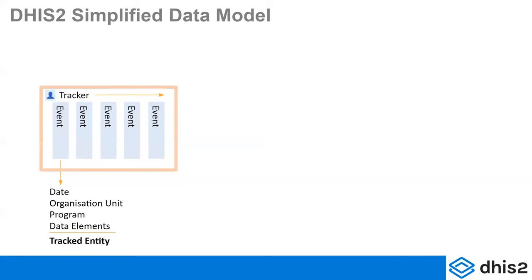But if you wrap a tracked entity around a series of events, then it becomes Tracker. This is when you get to have a longitudinal record so that events are not standalone, but actually follow a meta piece of data — in this example, a person. But a tracked entity can actually be anything. A tracked entity could be a lab sample that you follow through collection to result to reporting. It could be a tree you're following over time as it grows. There are many different ways people are using Tracker, identifying a tracked entity as whatever they want to follow over time and through events.